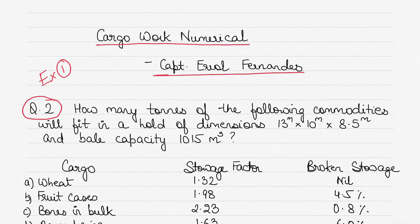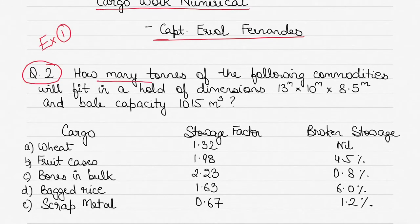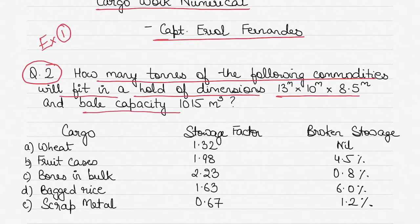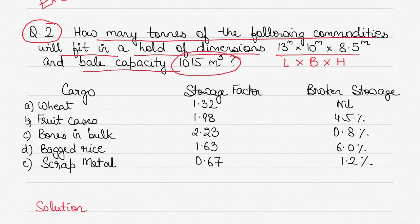I'll jump straight into the question. It's pretty easy and straightforward, but it will give you a good idea of the difference between grain capacity and bale capacity, which is what you need to focus on. The question asks: how many tons of the following commodities will fit in a hold of dimensions 13 metres by 10 metres by 8.5 metres, with a bale capacity of 1015 cubic metres? The first cargo is wheat with a stowage factor of 1.32.